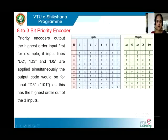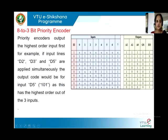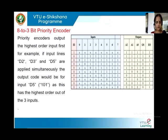Now if more than one input is active, let us assume D2, D3, and D5 are active at the same time. The question arises: to which input should the priority be given? D5 is of a higher value — a higher number — compared to D2 and D3. In a normal encoder, this confusion exists and the encoder shall not be able to identify which input to prioritize or generate the output accordingly.